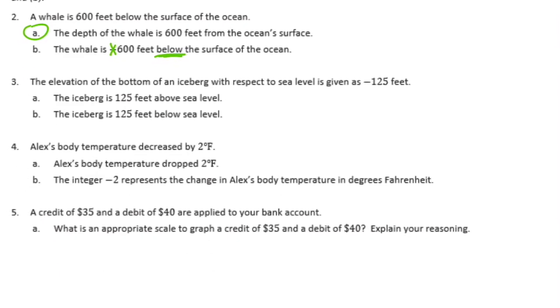Number 3, the elevation of the bottom of an iceberg with respect to sea level is given at negative 125 feet. Our choices are either above sea level or below sea level. If it's negative, that means it is below sea level.